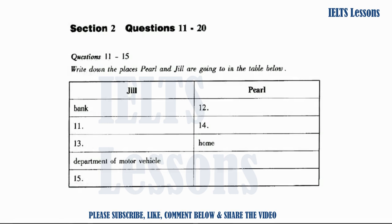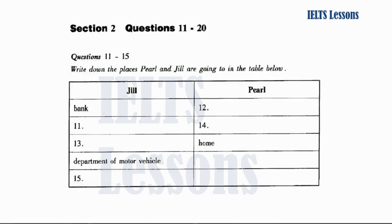Now listen to the conversation and answer questions eleven to fifteen. Hi Jill, how are you? Pearl, hello. How are you? Kind of tired. I've just moved into a new flat. Really? What's your flat like? Oh, it's a two bedroom flat. I share it with an Australian girl. My bedroom is small, but it's nice. The walls are pink and the ceiling is white. The curtains are dark red velvet. I have a desk by the window and a small white dressing table near my bed. The carpet is red and black in a diamond shape. I've got a wardrobe and an old chair.